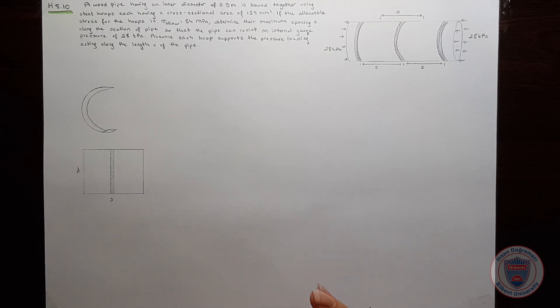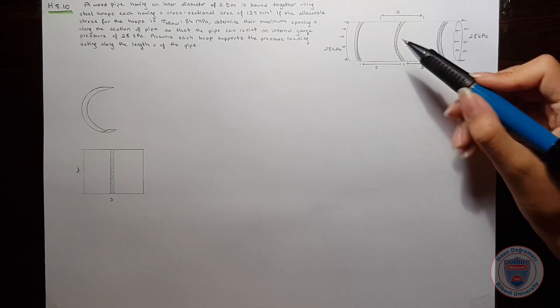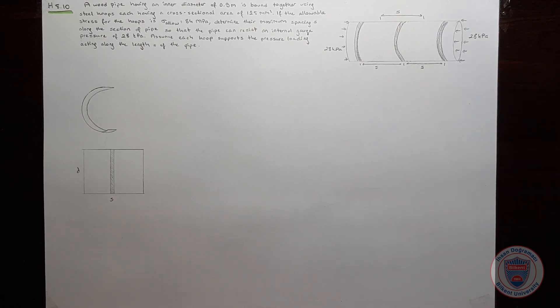Our goal is to determine the maximum spacing S along the section of the pipe so that the pipe can resist an internal pressure of 28 kPa. We will assume that each hoop supports the pressure loading acting along the length S of the pipe.